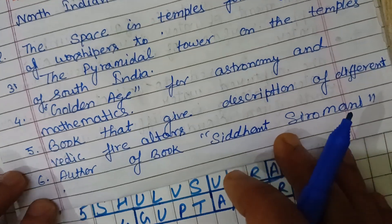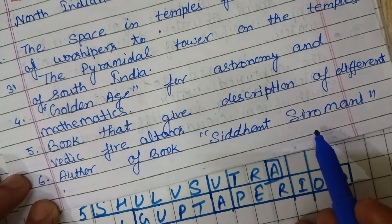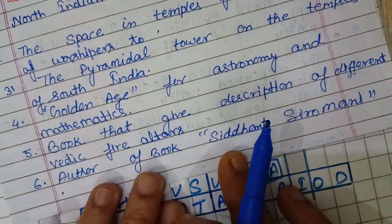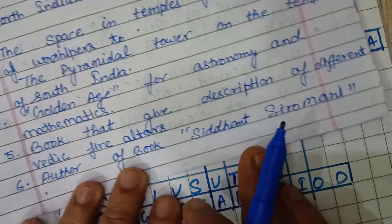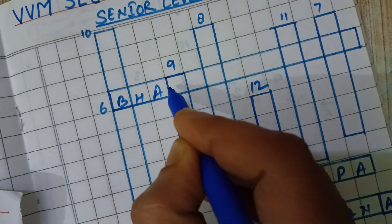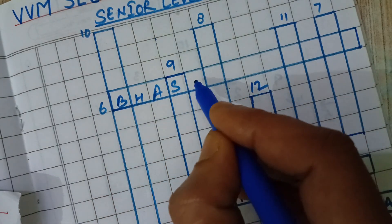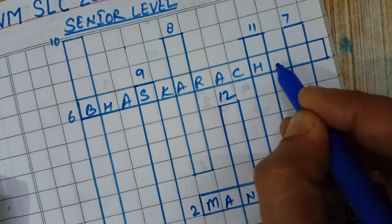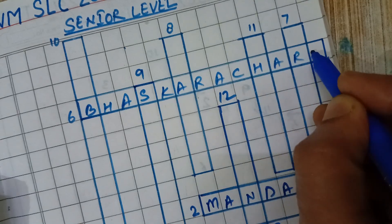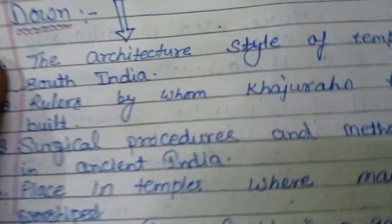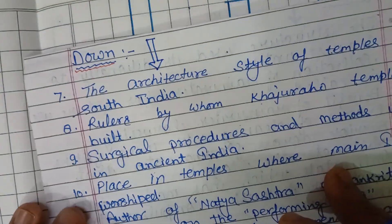Sixth question: Who is the author of the book Siddhant Shiromani? The author of Siddhant Shiromani is Bhaskaracharya. Bhaskaracharya is filled in at number six.